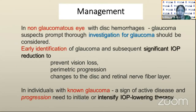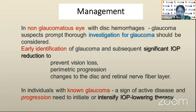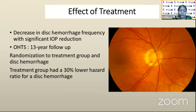In a non-glaucomatous eye with disc hemorrhage, thoroughly investigate for glaucoma or start considering the patient as a glaucoma suspect. If glaucoma is identified early and there is significant IOP reduction, you can prevent further visual loss. If an individual with known glaucoma develops disc hemorrhage, it is a sign of active disease and progression — this should prompt initiation or intensification of IOP-lowering treatment. Studies have shown that effective treatment decreases the frequency of recurrence of disc hemorrhage.